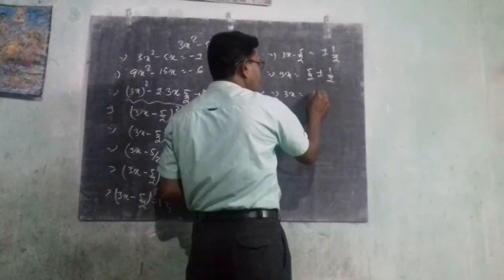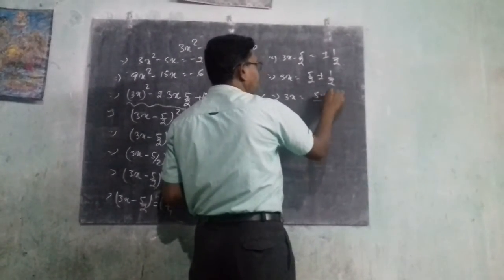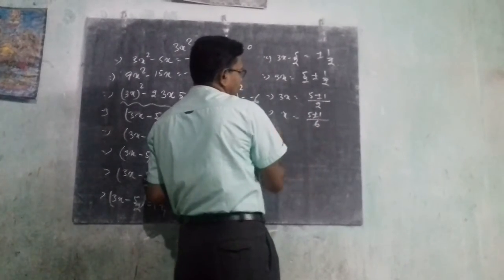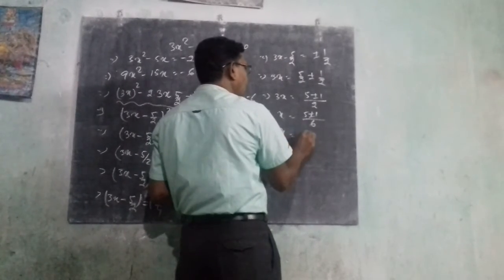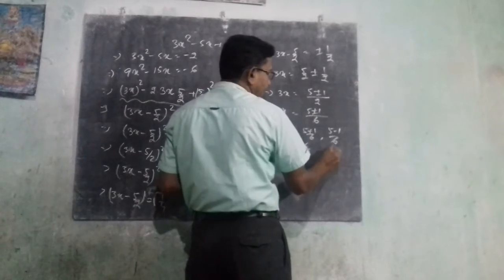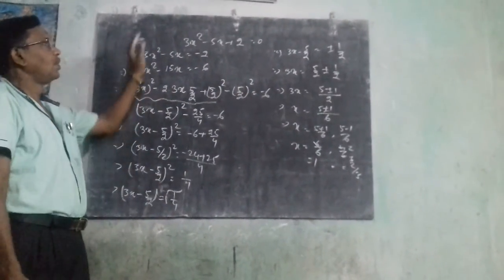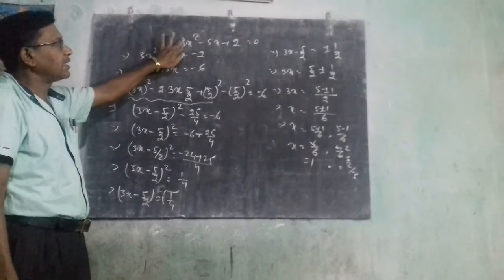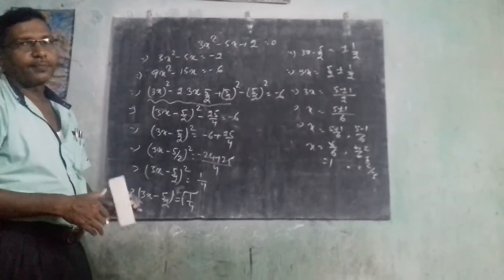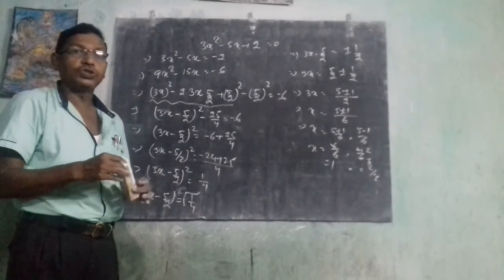Then 3x equals 5 over 2 plus or minus 1 over 2, so 3x equals (5 plus or minus 1). Dividing by 3: x equals (5 plus 1) over 6 and x equals (5 minus 1) over 6. So x equals 6 over 6, which is 1, and x equals 4 over 6, which is 2 over 3. Both methods give the same result. Next class we study solving the quadratic equation using the formula.